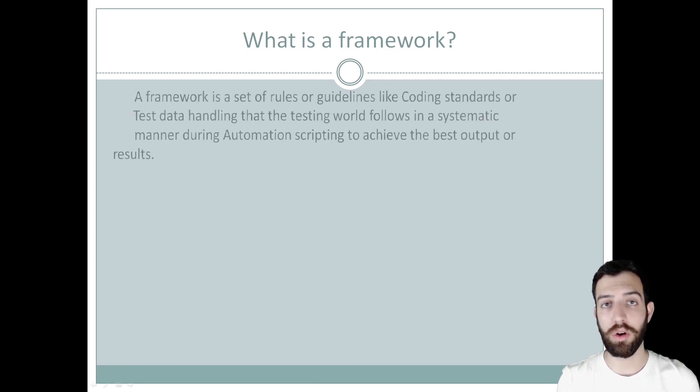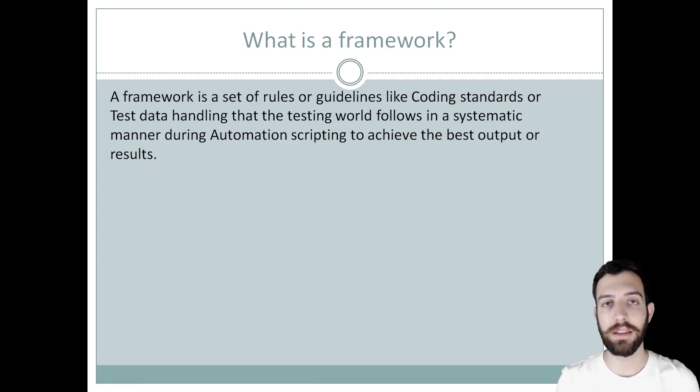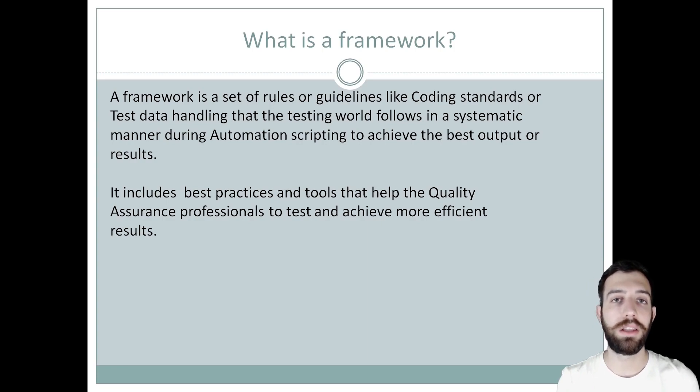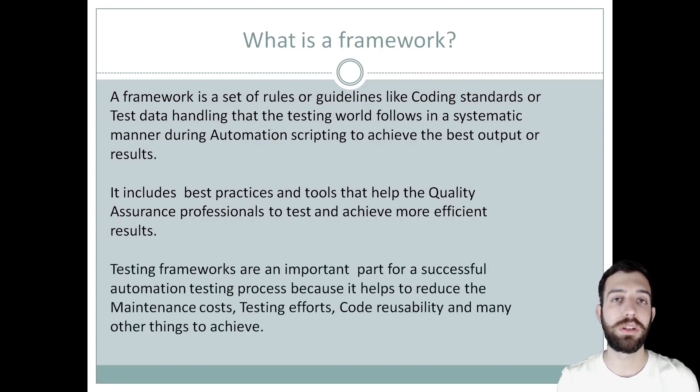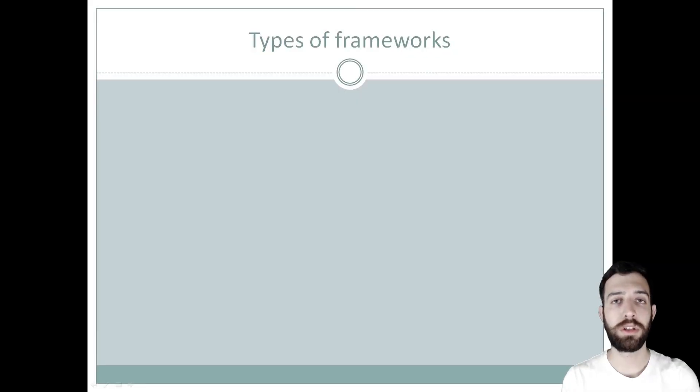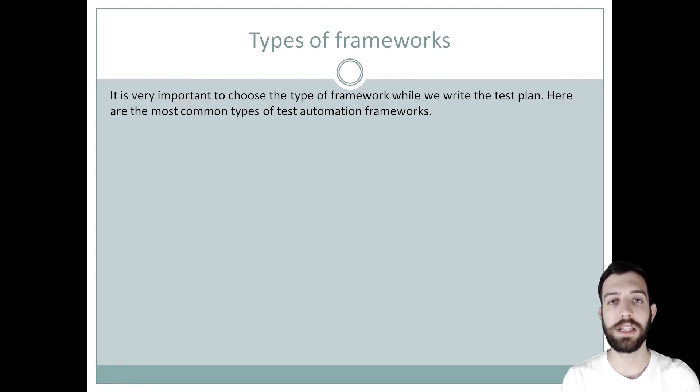A framework is a set of rules or guidelines like coding standards and test data handling that the testing work follows in a systematic manner during automation screening to achieve better outputs and results. It includes best practices and tools to help quality assurance professionals test and achieve better results. Testing frameworks are an important part of successful automation testing process because it helps to reduce maintenance cost, testing efforts and achieve reusability. It is very important to choose the type of framework while we write our test plan.